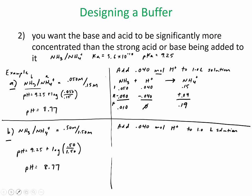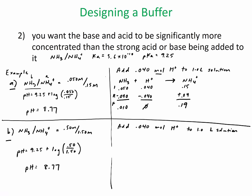You'll see that it's going to really hammer the pH. So my pH will be 9.25 plus the log of base 0.010 over acid 0.19, and if I calculate this I get a pH of 7.97.